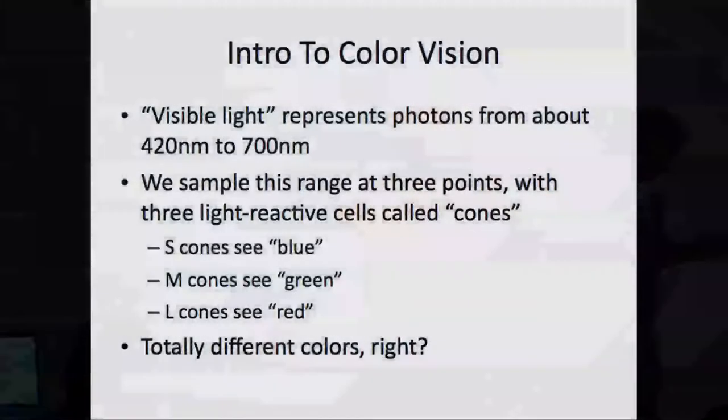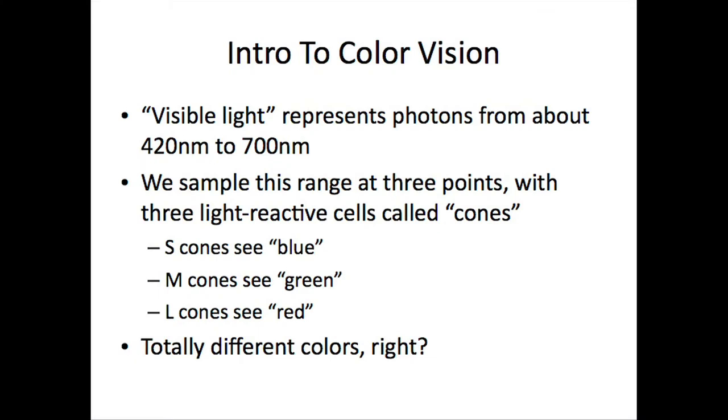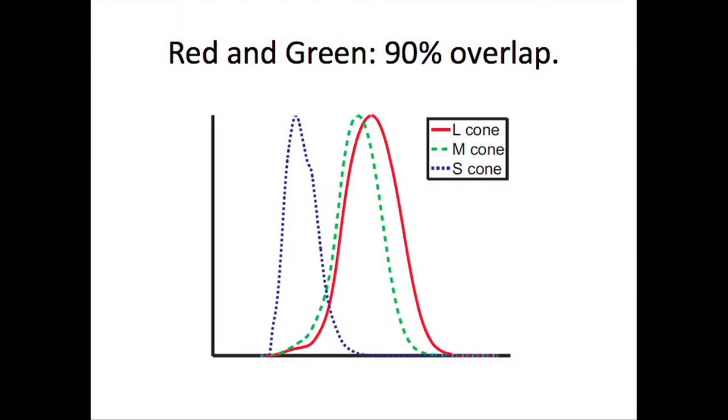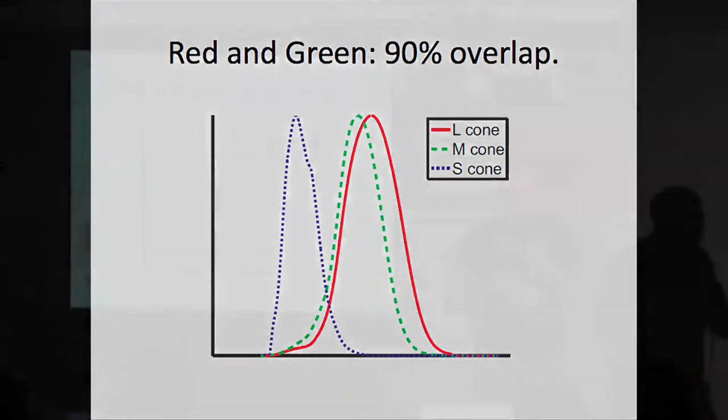So let's talk about how color vision actually works. Physical light represents photons from about 420 nanometer to 700 nanometer. We have sensors for red, green, and blue. Now we think of these as totally different colors. But when you actually look at the photoreceptors, there is 90% overlap between red and green. Only 35 nanometers separating them.